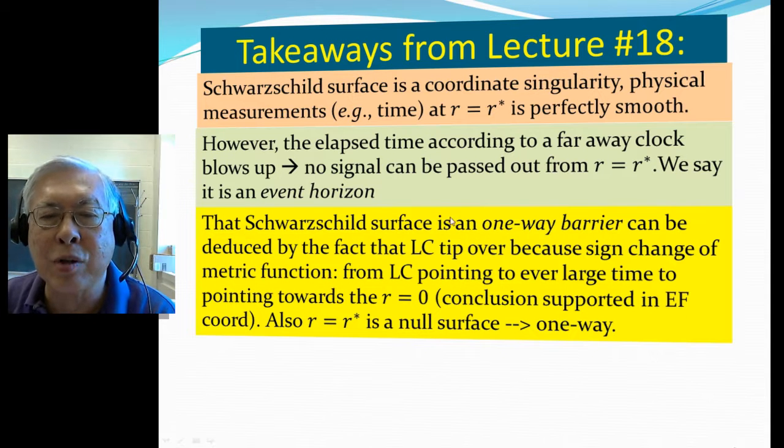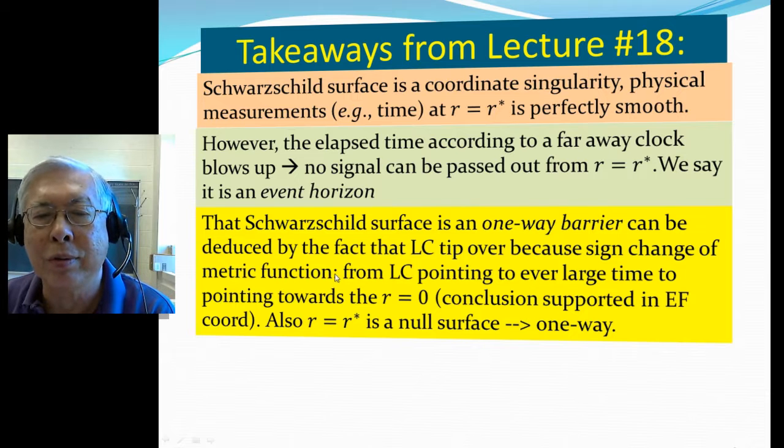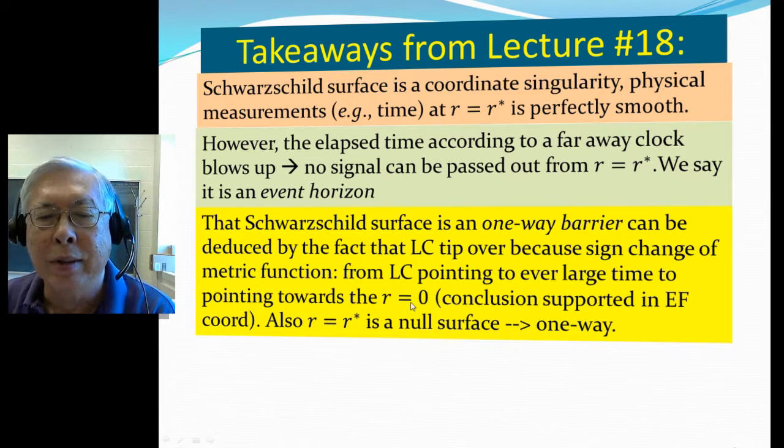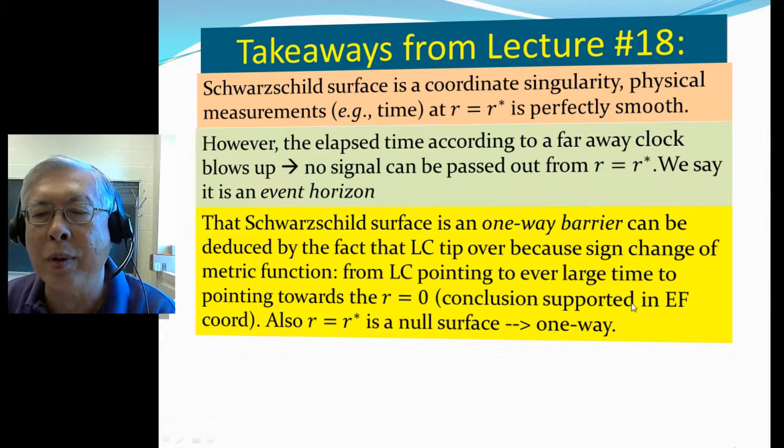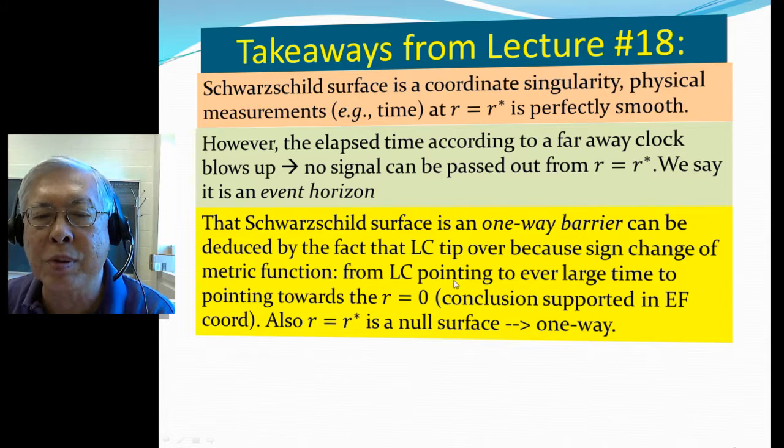Basically saying that we're learning that Schwarzschild surface is a one-way barrier. This can be due to the fact that light cones tip over because of sign change of the metric function. From light cone pointing to the ever larger time to pointing to R equals zero singularity. Now, we worry about because this is, first we're seeing the Schwarzschild coordinates. It becomes singular at this, so you're not worried whether you can draw any conclusions. But we can find a better behavior coordinates like Eddington coordinates. So the light cones tip over smoothly, so we can see this really is true.